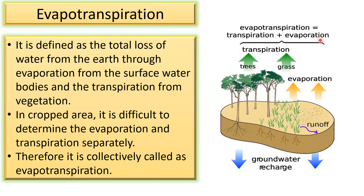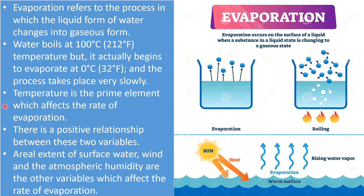Transpiration plus evaporation is called evapotranspiration. Evaporation refers to the process in which the liquid form of water changes into gaseous form. Water boils at 100 degrees Celsius, but it actually begins to evaporate at 0 degrees Celsius and the process takes place very slowly. Temperature is the prime element which affects the rate of evaporation, and there is a positive relationship between these two variables.